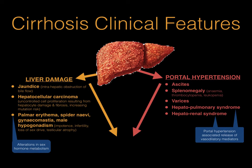The two final clinical features of cirrhosis worth mentioning result from a combination of liver damage and portal hypertension: hepatic encephalopathy, and cirrhotic cardiomyopathy or impaired heart function related to liver disease. Watch our video on hepatic encephalopathy for more on this topic.